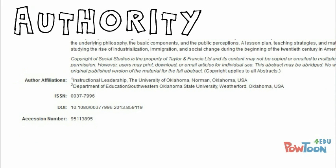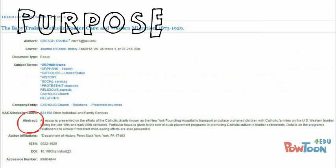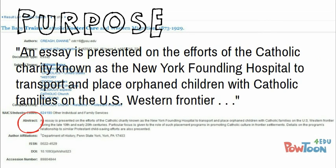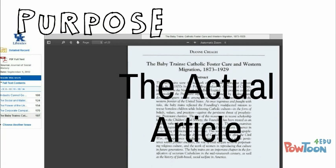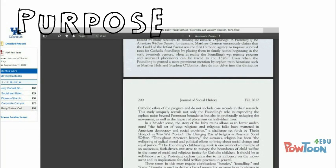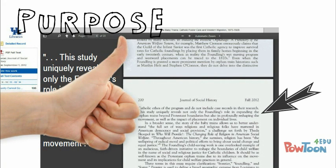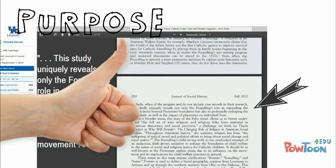Next, purpose. Why was this article written? Quality information is going to be very clear in expressing purpose, and you should expect to see that in the articles you use. But then you're going to have to read the article with a critical eye. Does the article really do what it says it would? You can't just take their word for it.